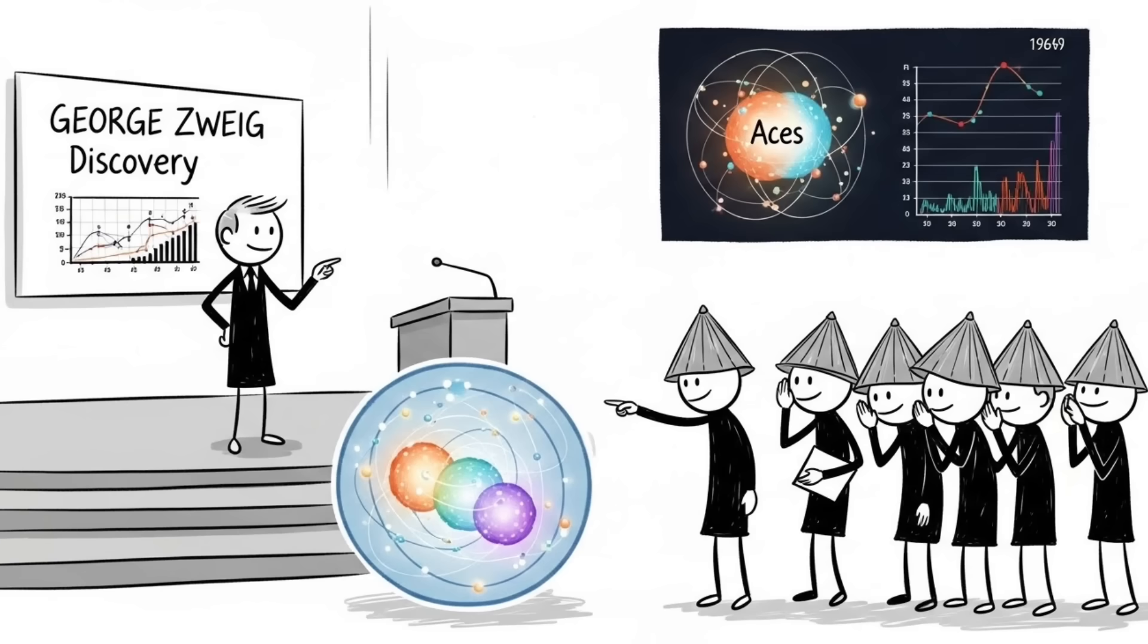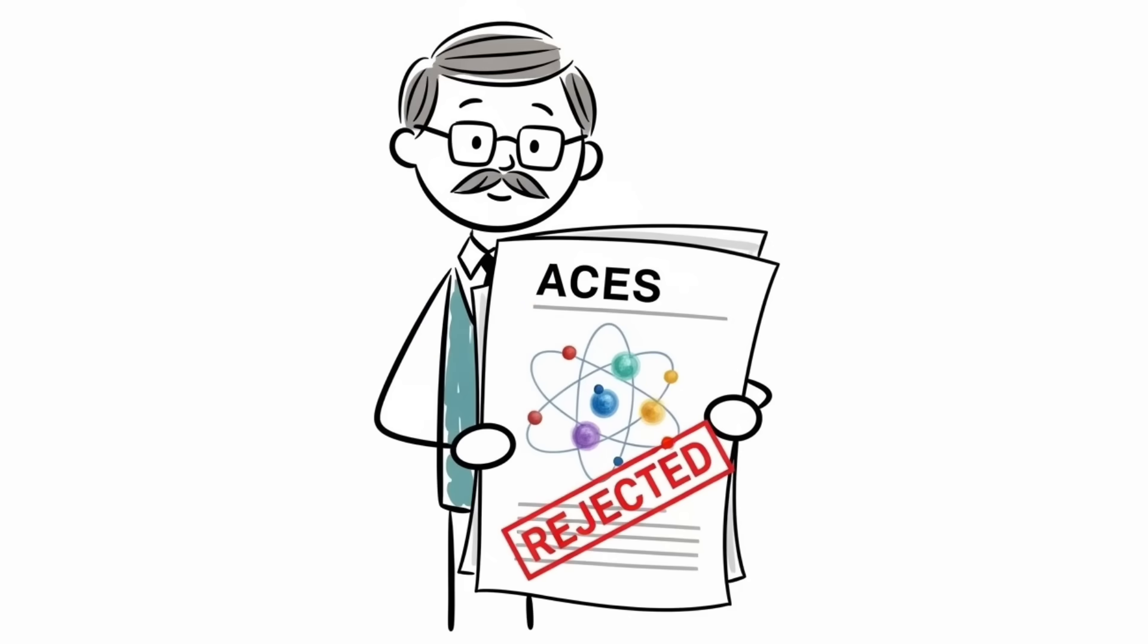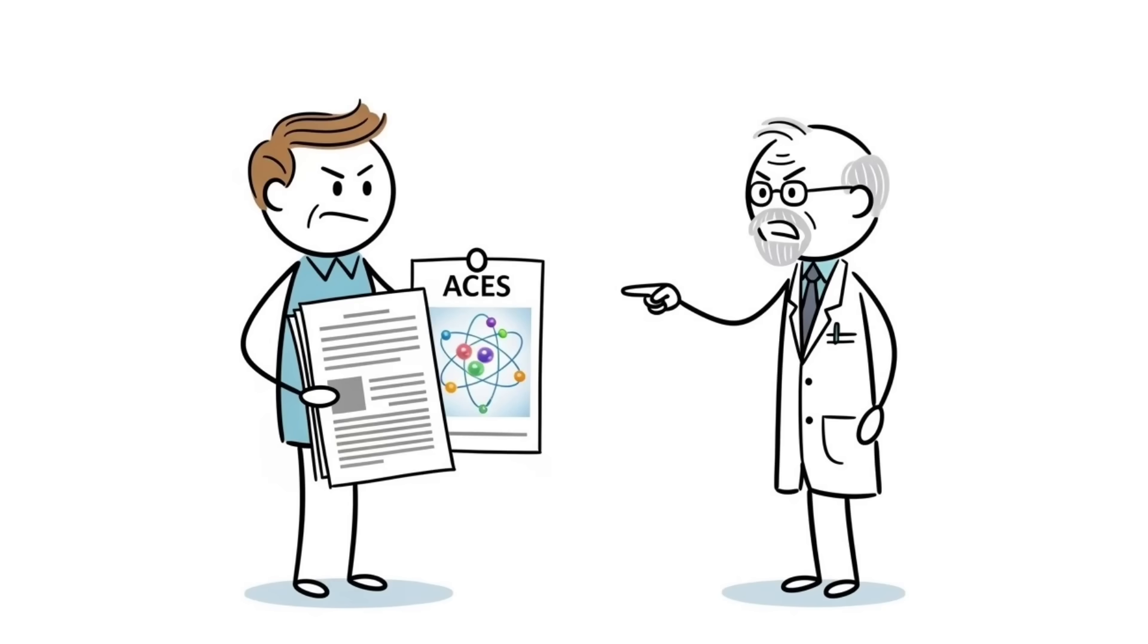His colleagues at the world's top physics lab thought he'd gone mad. When he tried to publish, they rejected his paper. When he came back to Caltech, they blocked him from getting a teaching job because his theory was too embarrassing. One senior scientist called him a con artist.